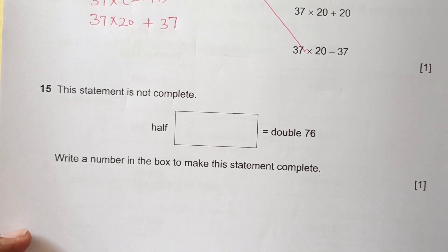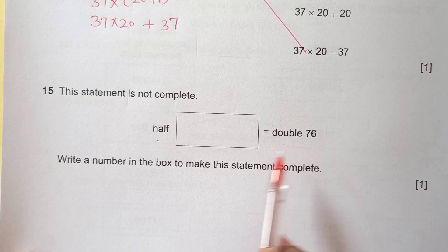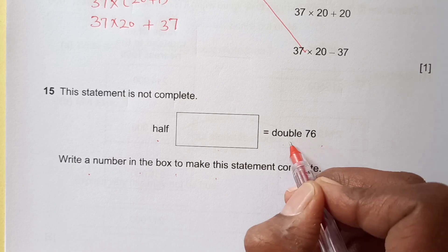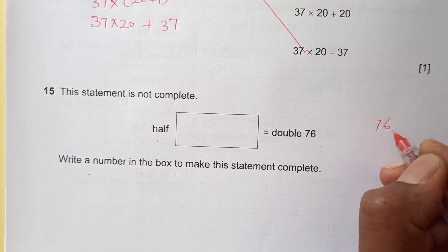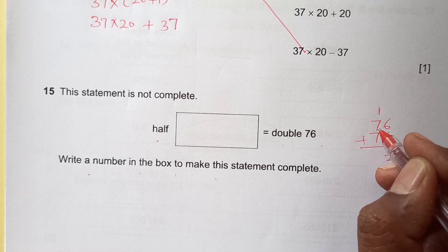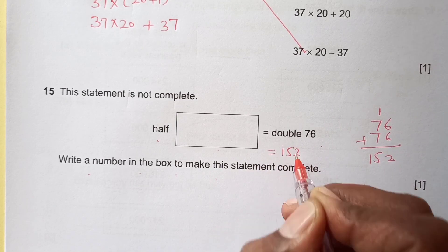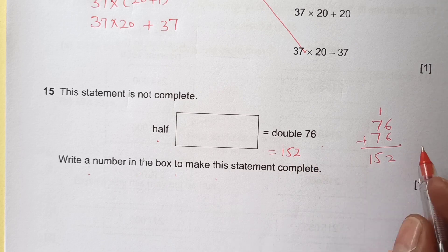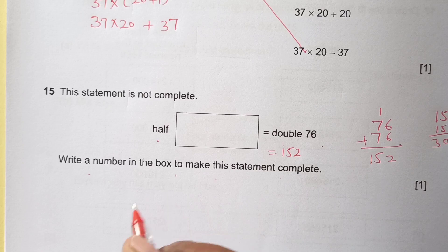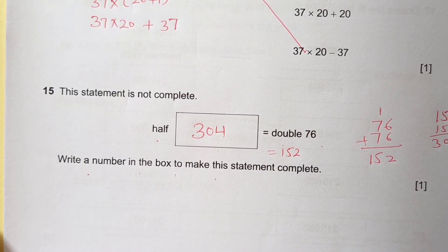Number 15. The statement is not complete. Half of that is equal to double of this. Write the number in the box to make the statement correct. Double of this is 76 plus 76. 6 plus 6 is 12, so 152. Half of what is 152? Again we will add 152 and 152, so 304. Half of 304 is 152.